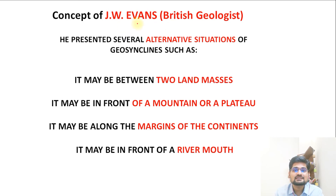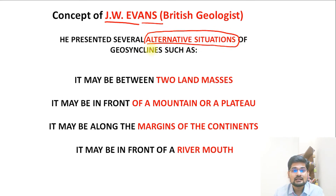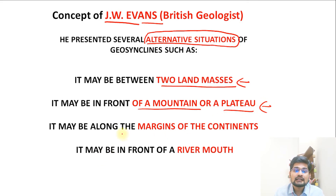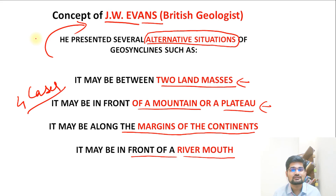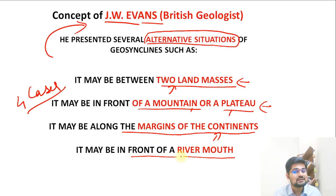British geologist JW Evans presented four alternative situations for the existence of geosynclines. It may be between two land masses; it may be in front of a mountain or a plateau; it may be along the margins of continents; or it may be in front of a river mouth. These represent locations where sedimentation — the first step in the geosyncline life cycle — can occur, with sediments coming from erosion of surrounding land masses.